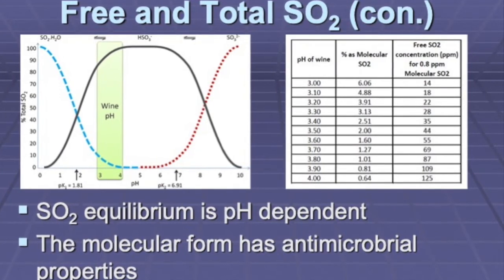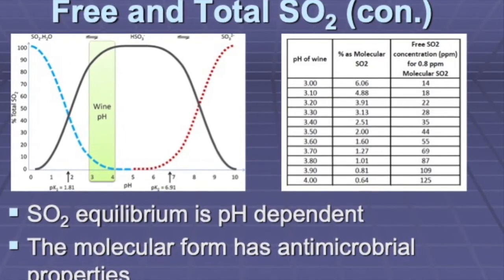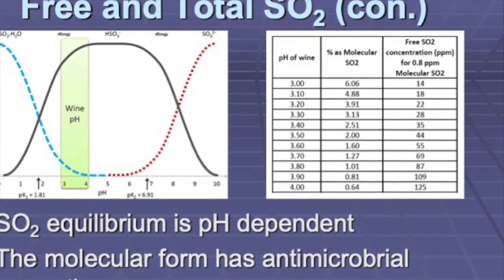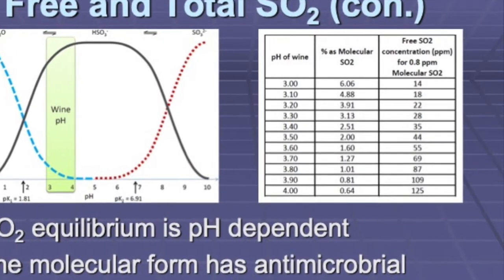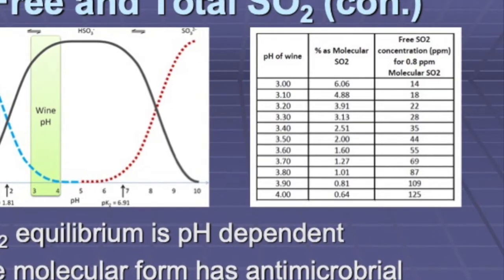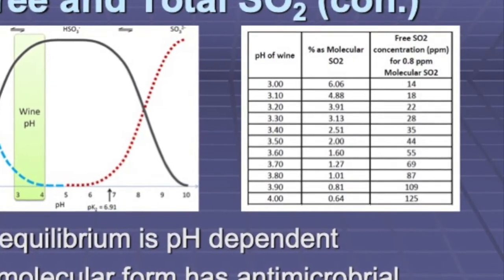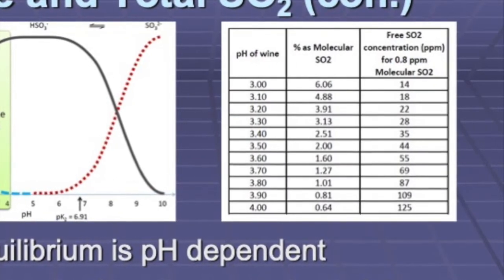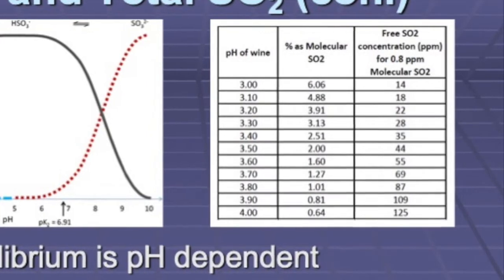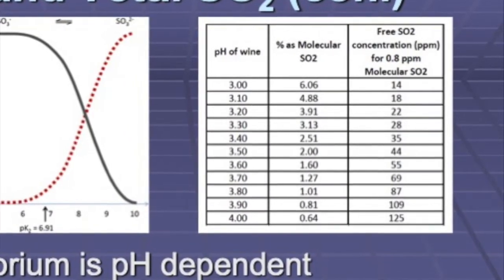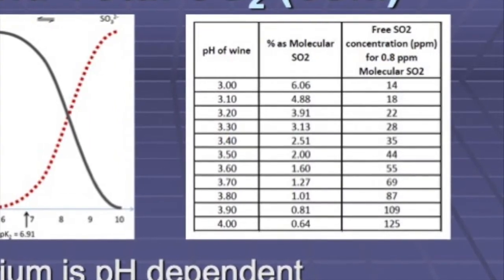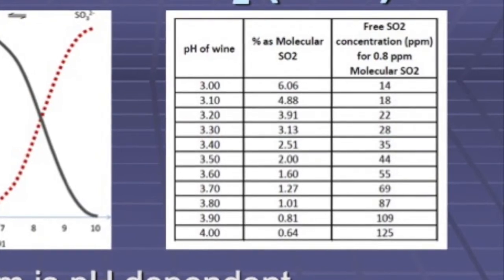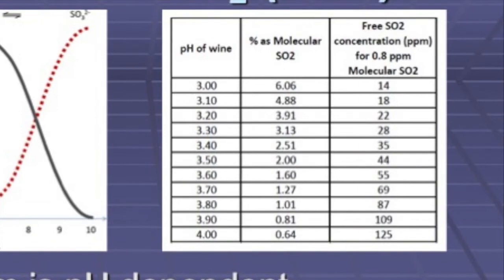The bisulfite form and sulfite forms are inactive microbially and oxidatively. The bisulfite form reacts and binds to other wine components making up the bound form of the total SO2. It is the molecular form that is the important active form of SO2, and in this table on the right hand side you can see how the molecular form changes as a percentage of the pH of the wine. As the pH rises, the percent molecular SO2 declines. The free SO2 concentration necessary to achieve 0.8 parts per million of molecular SO2 must increase as wine pH increases, in order to maintain effective antioxidant and antimicrobial activity.